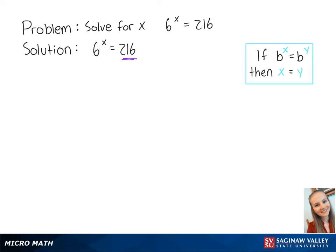216 is equal to 6 to the third power, so we can write this as 6 to the x equals 6 to the third power. Now that x and 3 share the same base of 6, we can write this as x equals 3. And this is the final answer.